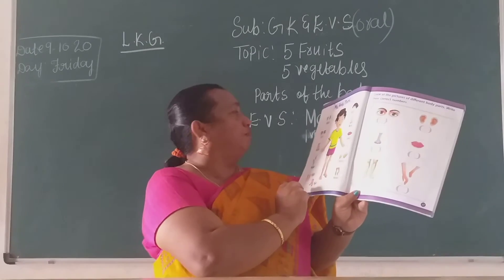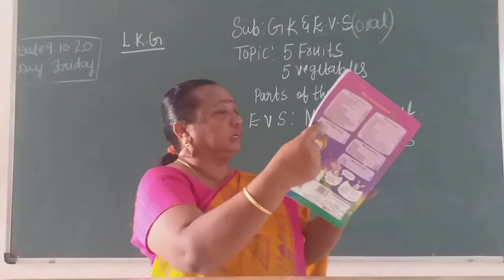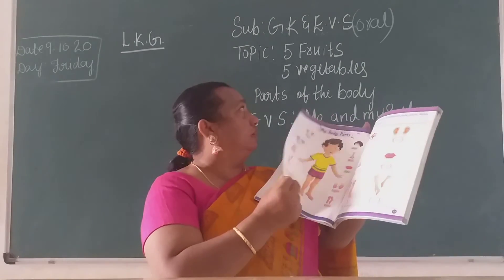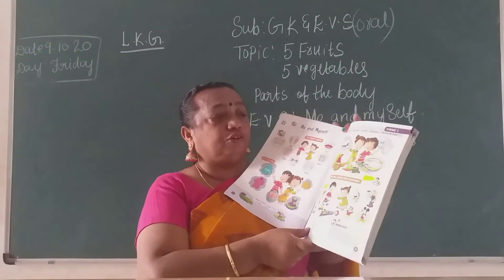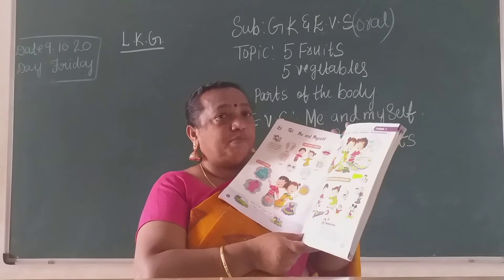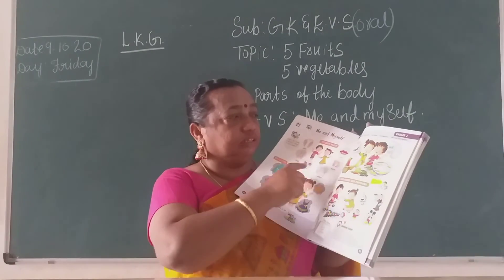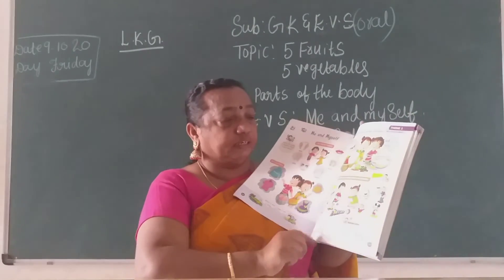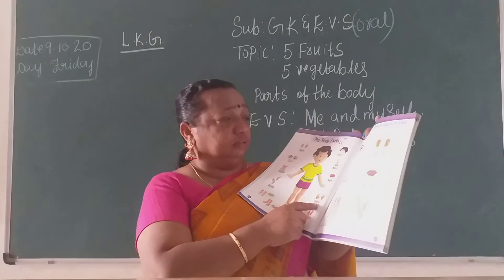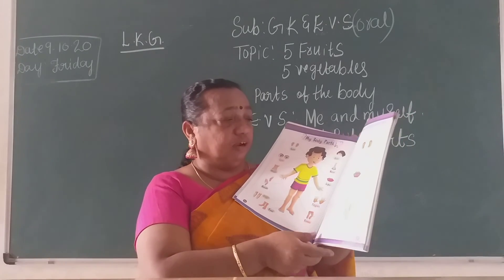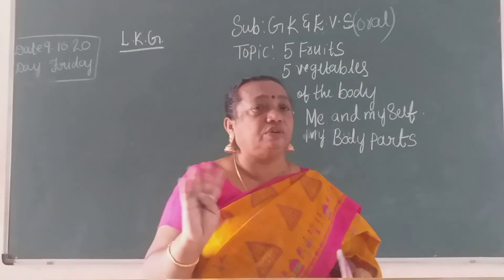Me and myself, my body parts. See you next class. You have to go through children. Take out your EBS book and read. For FA1 test children, from 15th the test will start. I will send you today's timetable. I have to practice children from 15th onwards. Take out your EBS book, you have to practice this orally. I will ask you in the Google Meet children. Everything I have to practice, I will ask you orally. Practice. Okay, see you next class children. Bye.